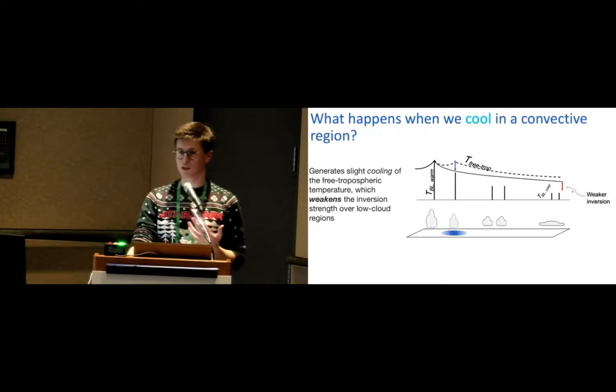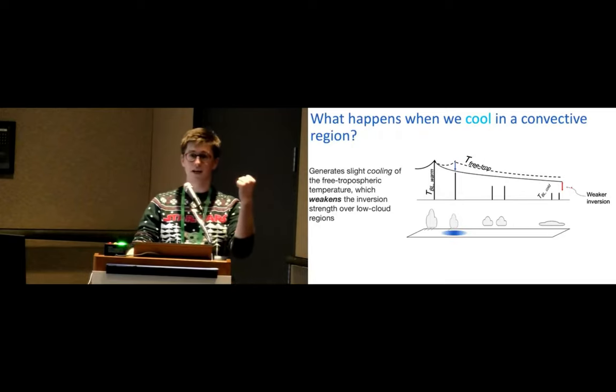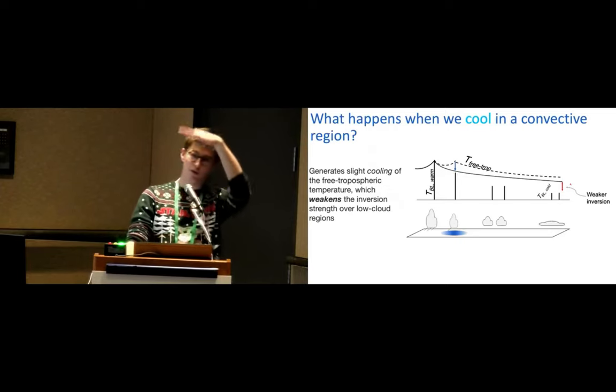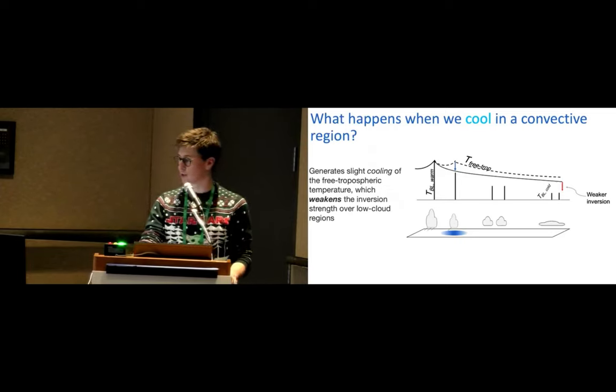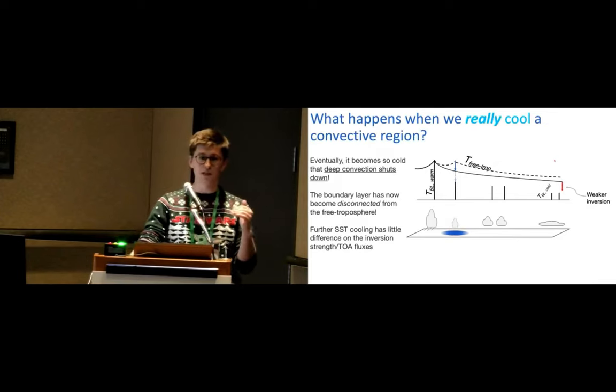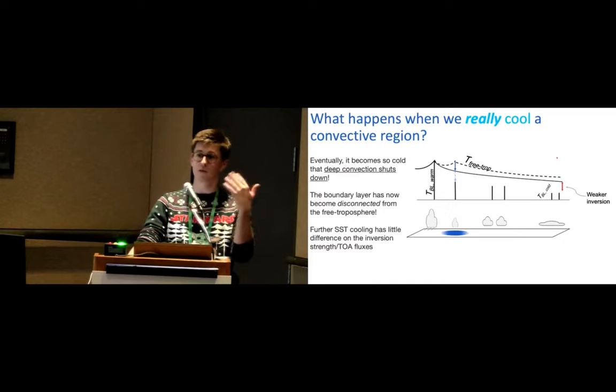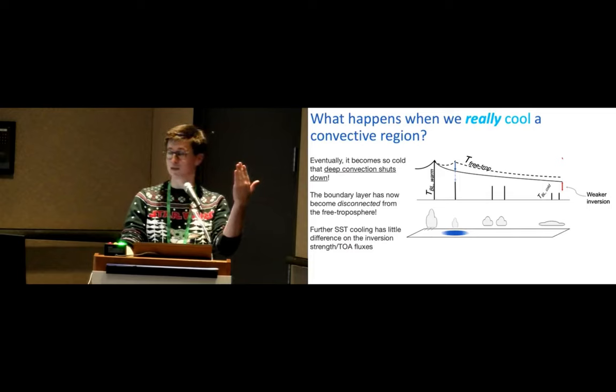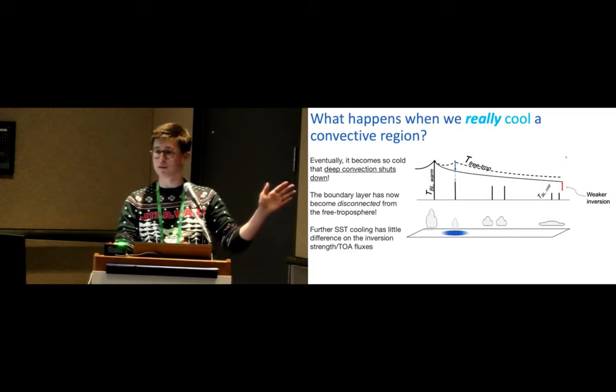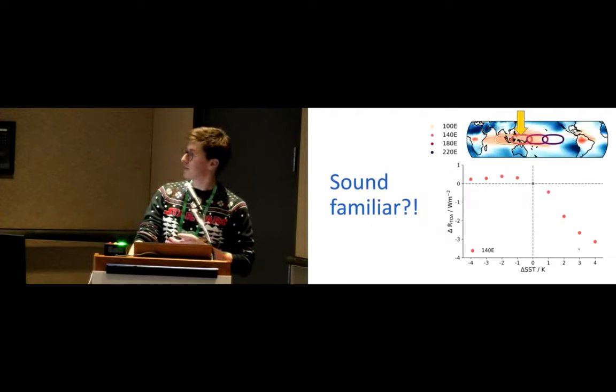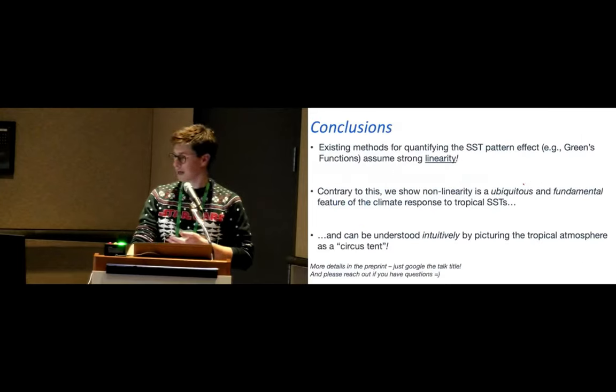Now, if you cool in a convective region, initially you're lowering the height of this tent fabric. And then because you've got something which is already in contact, pushing up, and then through tension you lower it, you kind of lower this fabric across the whole of the tropics, you get a weaker inversion. But if you continue to cool in a convective region, eventually you just shut down deep convection. And in that model, it's the equivalent of having your tent pole now no longer in contact with the fabric of the free troposphere. And now the tent pole can go down as far as it likes. The free troposphere doesn't really care. And that's kind of, should sound familiar, because that's kind of what we see in this setup as well.